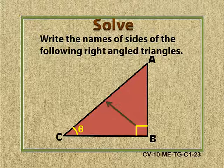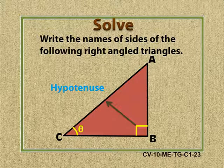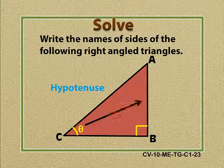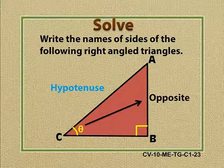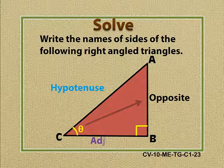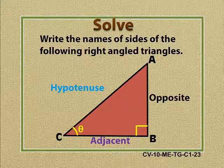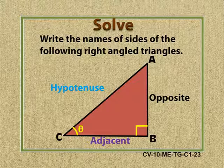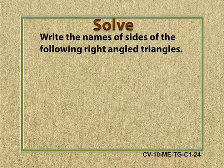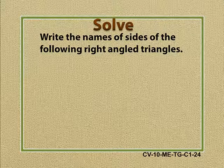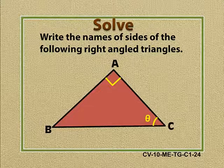Side opposite to right angle is hypotenuse. Side opposite to theta is opposite side and the remaining side is the adjacent side. Now the next one. Write the names of sides of the following right angle triangles.